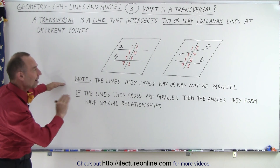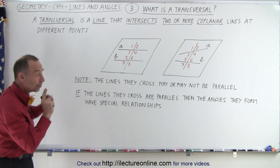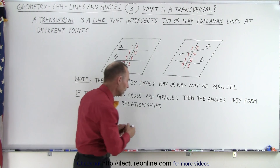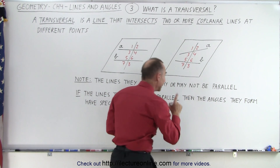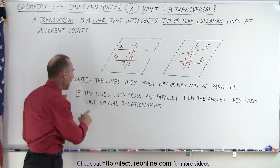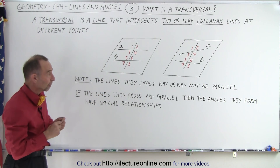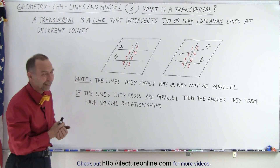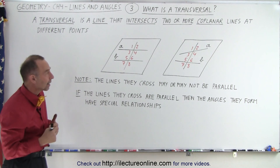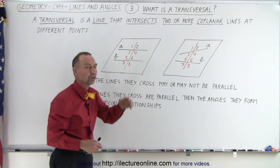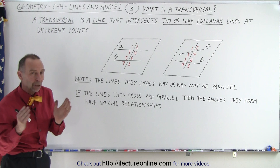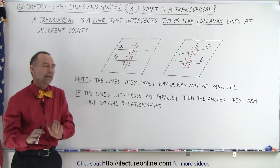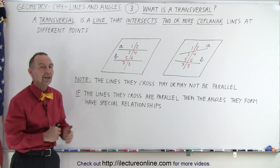Now note again, they don't have to be parallel to one another. But if the lines that the transversal crosses are parallel, then the angles they form have special relationships, and we're going to look at those. So much of what we experience when dealing with transversals is when they cross parallel lines, and then we can say something about the relationship between the various angles they form. So even though they don't have to be parallel, they typically are used with parallel lines.